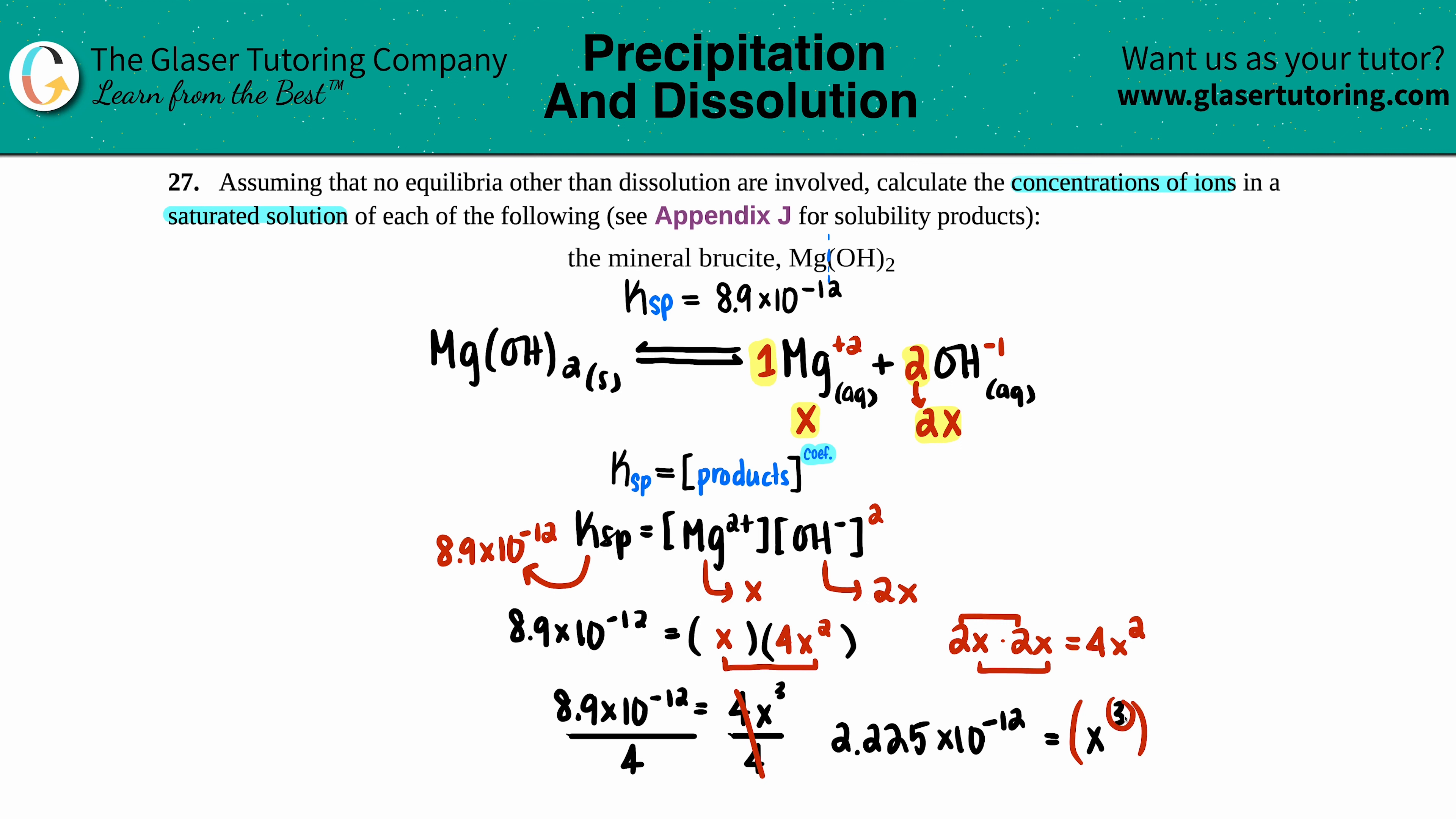Three would be 3 over 1, so you raise it to the 1/3—the inverse of that number. Whatever you do on that side, you do to the other side. This cancels, and now you're left with x equals that raised to the 1/3. I get 1.3 times 10 to the negative 4th, and that's molarity.